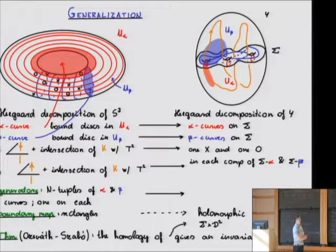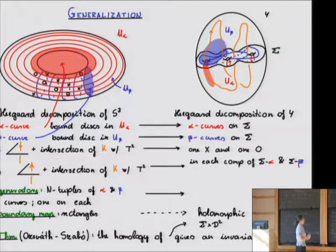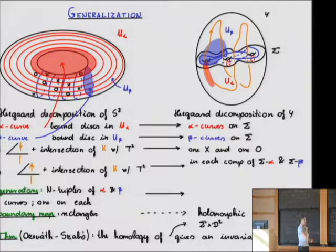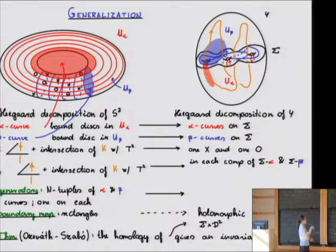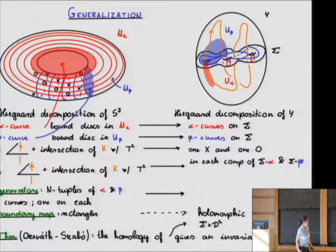I wanted to generalize all of this to arbitrary three-manifolds. The whole picture sits on a torus; a torus embedded in three-space gives you a Heegaard decomposition of your three-dimensional manifold. The horizontal curves, which were red in the previous pictures, are curves that bound discs in one of the Heegaard handlebodies, and the blue curves bound discs in the other handlebody.